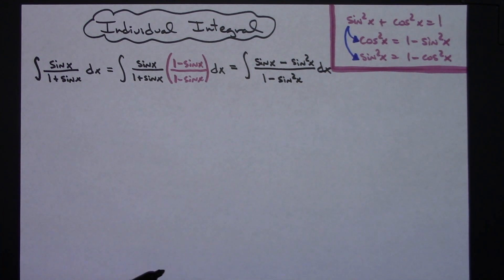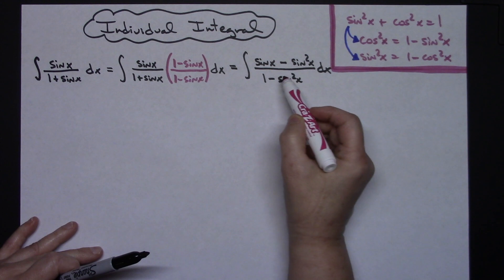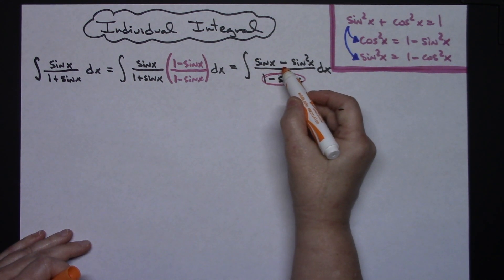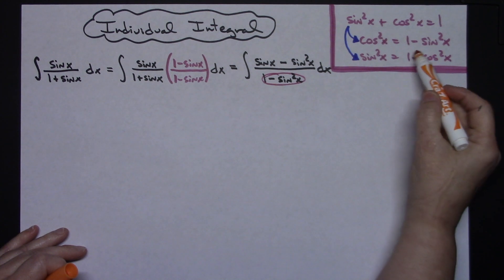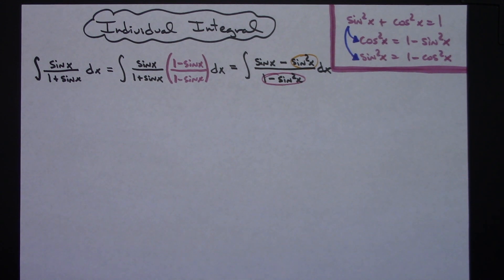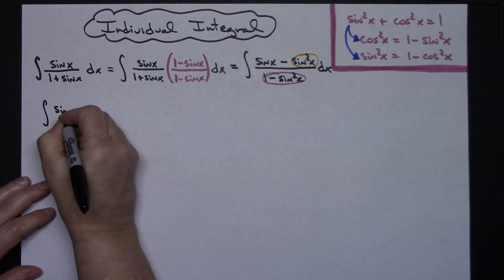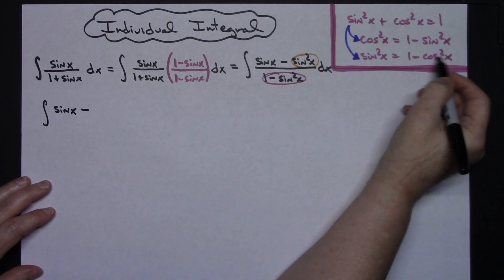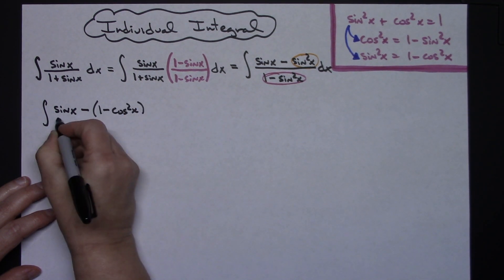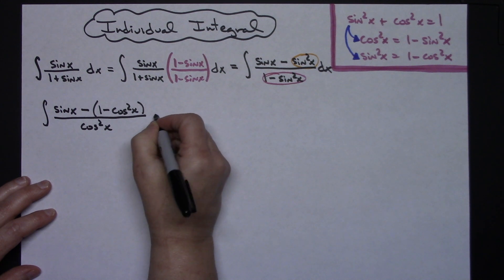Now it's at this point that I'm going to do a lot of substitutions. Right here I've got 1 minus sine squared x, so I can substitute cosine squared x in the bottom. And right here I've got minus sine squared x, so I can substitute the binomial 1 minus cosine squared x in for that one. So I'm going to be doing those two substitutions.